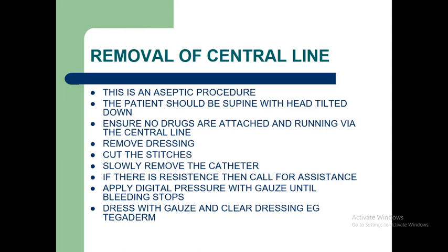Removal of a central line is an aseptic procedure. The patient should be positioned with head tilted down. Ensure no drugs are running via the central line. Remove the dressing and cut the stitches. Slowly remove the catheter — if there is resistance, call for assistance. Apply digital pressure with gauze until bleeding stops, then dress with gauze and clear dressing.